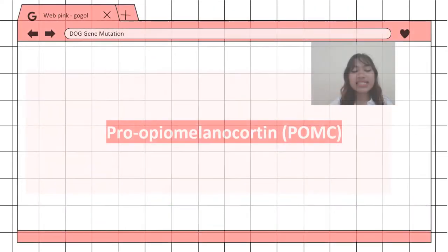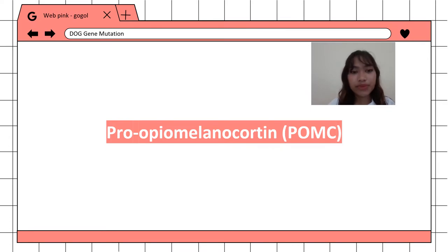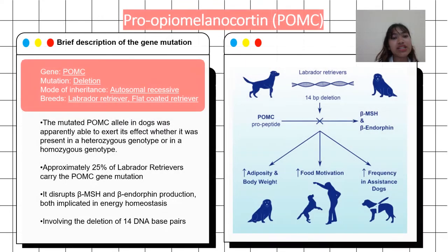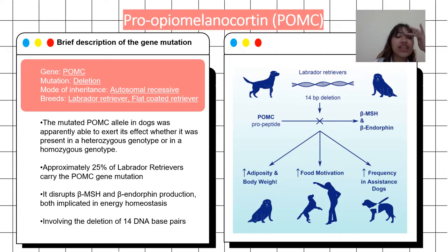First, this is the pro-opiomelanocortin or the POMC dog gene mutation. The gene that is being mutated is the POMC gene, and the mutation type is deletion. The mode of inheritance is autosomal recessive.